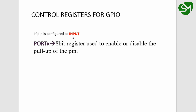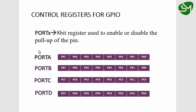If the pin is configured as input, this PORTX register is used for enabling or disabling the pull-ups of the pin. All the GPIO pins in our microcontroller have internal pull-ups. If this bit is set, the pull-ups will be enabled, and if this bit is cleared, pull-ups will be disabled. For example, if PA0 is configured as input and I want to enable the pull-up of PA0, I can just set that bit. If I want to disable it, I can clear that bit.